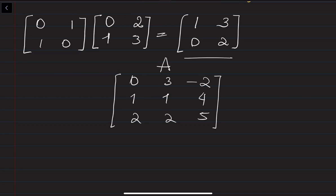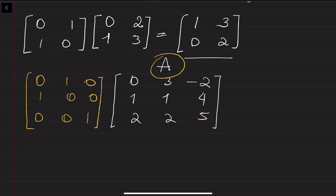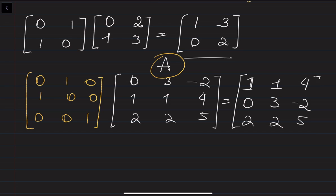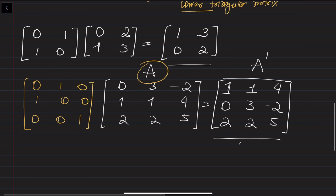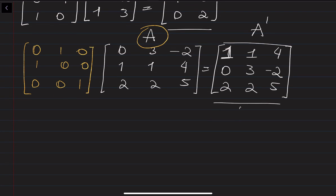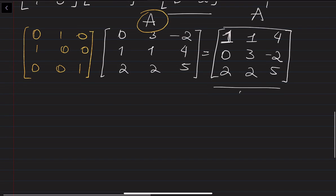Let me find the LU decomposition of this matrix A. First we need to interchange the rows — the first row with the second. The permutation matrix is: zero, one, zero; one, zero, zero; zero, zero, one. After applying it, we get A prime: one, one, four; zero, three, minus two; two, two, five. This modified matrix A prime can be brought to LU decomposition because it doesn't have zero as the leading entry.